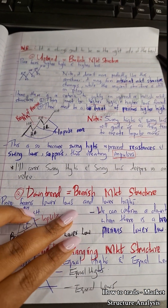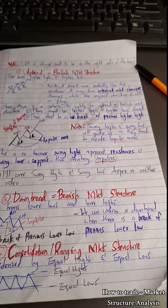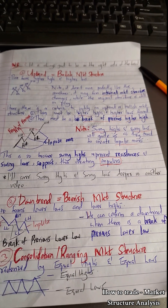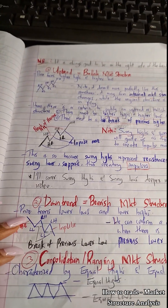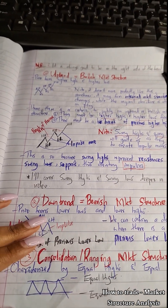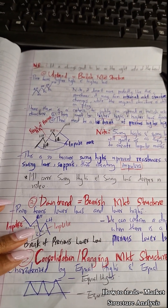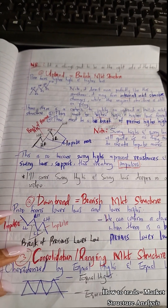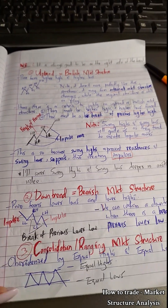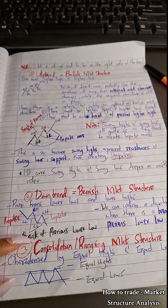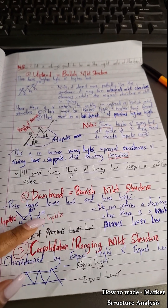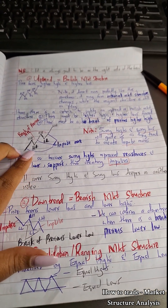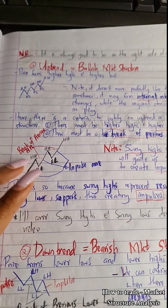The second market structure is the downtrend, which is the bearish market structure. Here, price forms lower lows and lower highs. We can confirm a downtrend when there is a break of the previous lower low. With an uptrend it's the break of the previous higher high, and with a downtrend it's the break of the previous lower low.